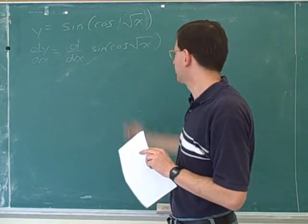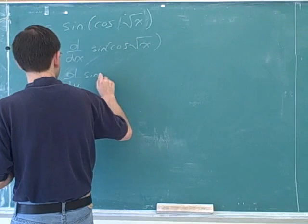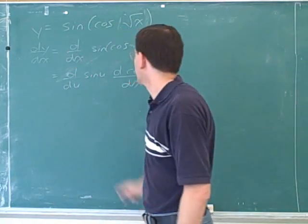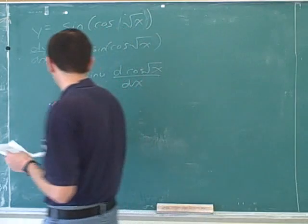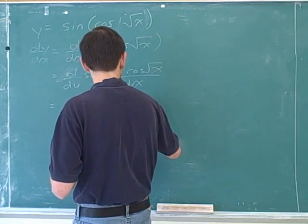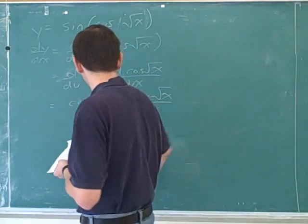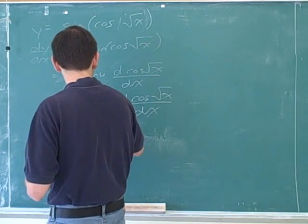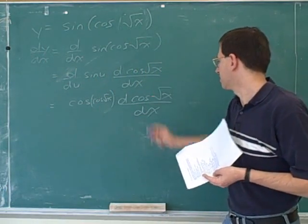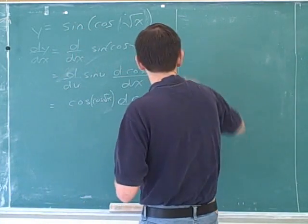Alright, so here we use the chain rule because there's functions inside the functions. So, first of all, the outside function here is just a sine function, so we can split that off and then take the derivative of the inside. Derivative of sine is cosine of u. And then we're supposed to evaluate this at the inside, so that would be cosine root x. So that's cosine of a cosine of root x, that's what you got. Alright, and then we assess the derivative of the outside and then the derivative of the inside. Well, it looks like we still have a function inside the function, so we have to use the chain rule again.